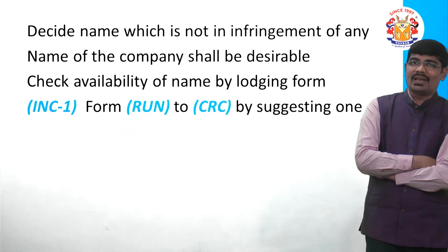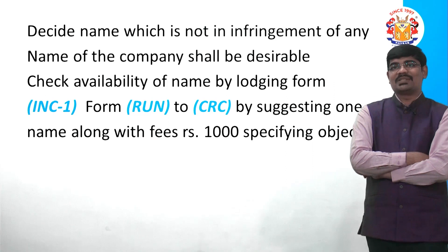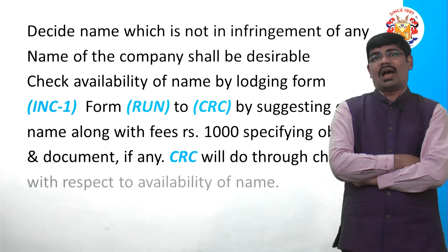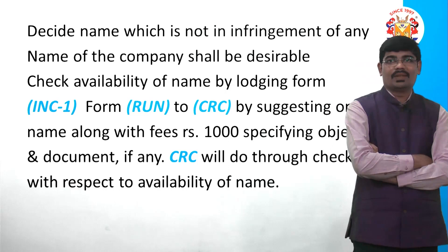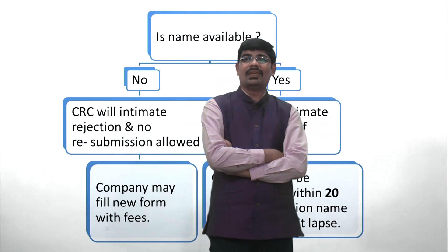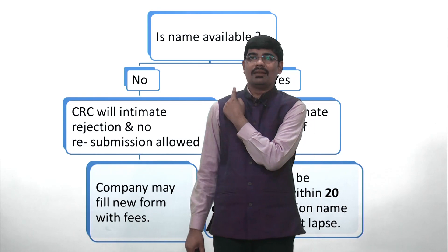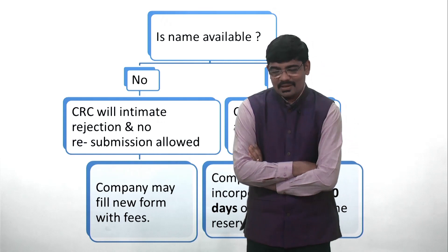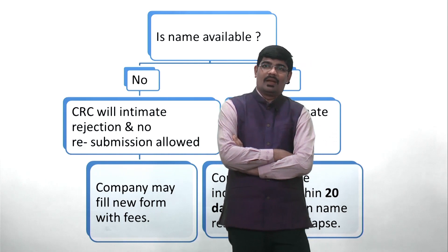After submitting Form RUN, CRC does an in-depth check on name availability. Two situations can arise: the name is available or it is not. If the name is not available, CRC will intimate via email that the name is not available and the form is rejected — you need to file a new form. If the name is available, CRC will inform via email, and from the date of intimation the name is reserved for 20 days.